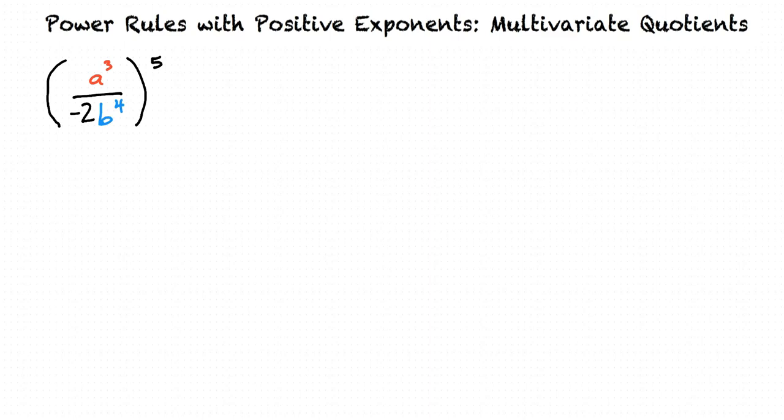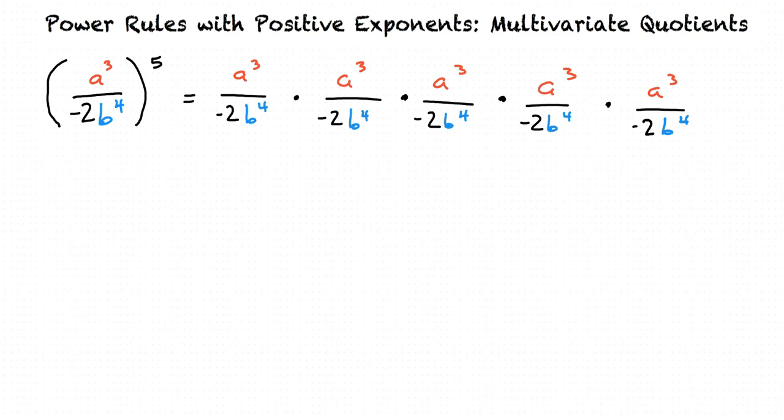Since the entire fraction is raised to the fifth power, we can think of this as a cubed over negative 2b to the fourth, used as a factor five times. Multiply all these factors together to find the final simplified answer.